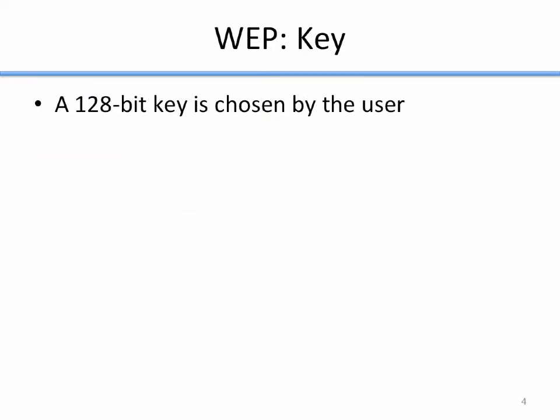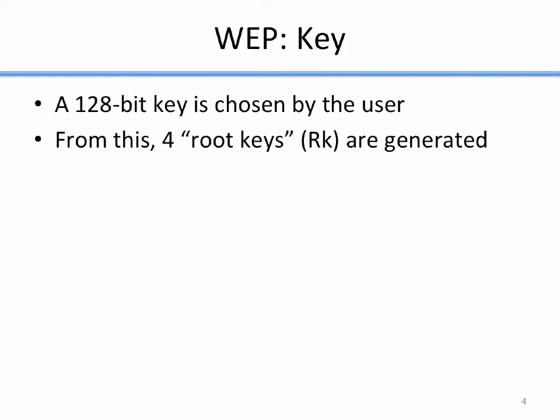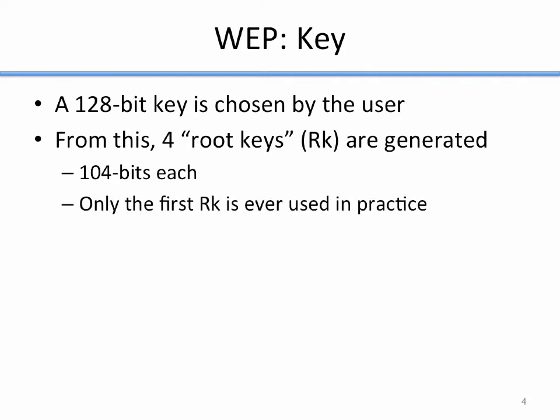WEP uses a stream cipher. So how does WEP choose the key? There's a 128-bit key chosen by the user, usually on the router configuration, or the router chooses it randomly. This is the key you type in hexadecimal when connecting to a WEP network. From that 128-bit key, four root keys are derived, each 104 bits. Only the first root key is ever really used in practice — the other three were part of the standard but no one used them.